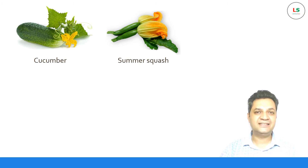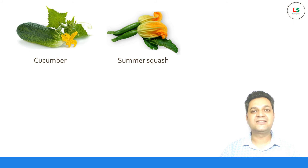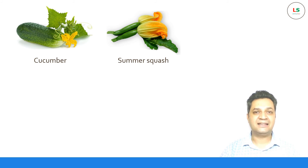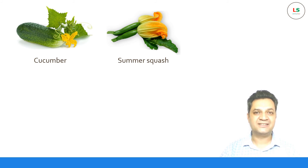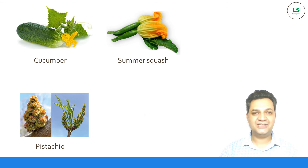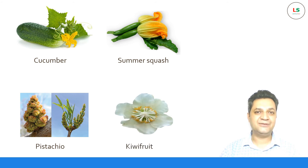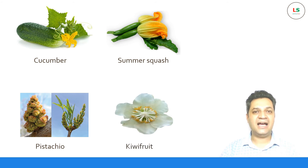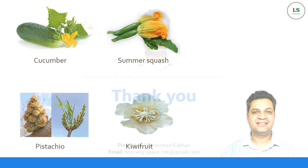In both of these, the male and the female flowers blossom on the same plants, and thus they are called monoecious. We have pistachio and kiwi fruit which contain male and female flowers on separate plants. These are called dioecious.